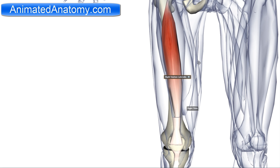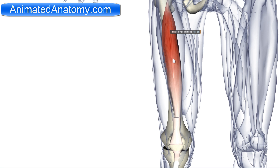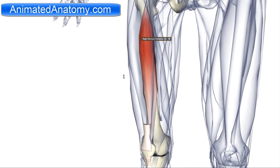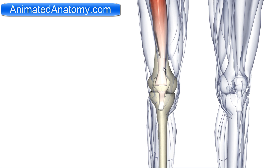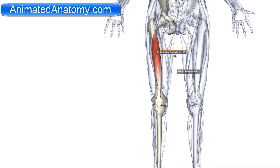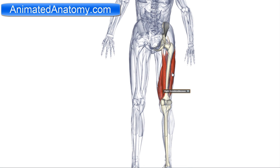There is one more muscle that creates the quadriceps femoris — the vastus intermedius. The vastus intermedius has its origin on the anterolateral femur, as you can see here. The insertion again is on the patella, and then via the patellar ligament to the tibial tuberosity. All of these muscles receive blood from the femoral artery, are all innervated by the femoral nerve, and are all antagonized by the hamstring muscles from the back.